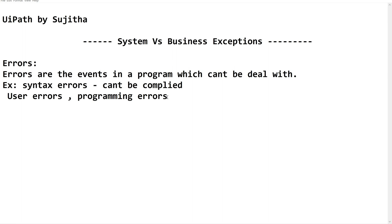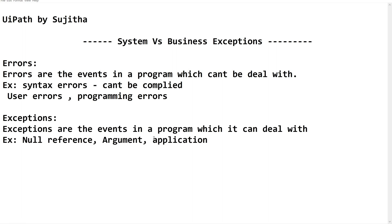Now let us come back to exceptions. Exceptions are the events in a program which the automated program can deal with. Examples include null reference, argument exception, application exceptions, and business rule exceptions — all these come under exceptions which we can handle. We can add a mechanism in our automated program to run some set of activities if this kind of exception is caught. Under exceptions, there are two different subparts.